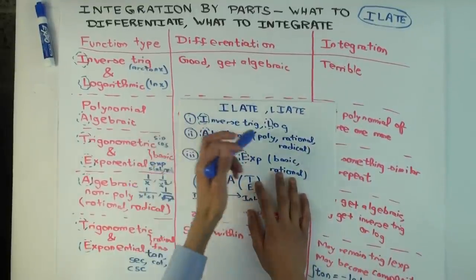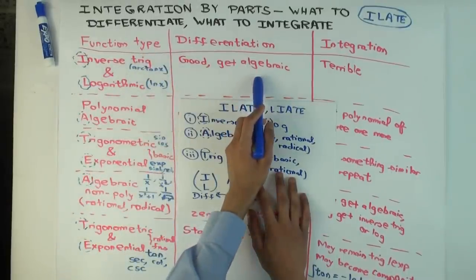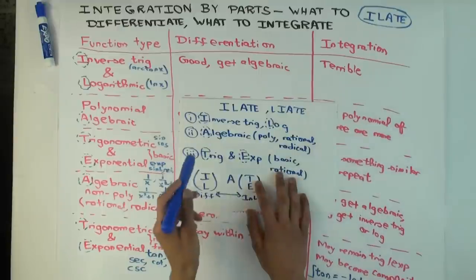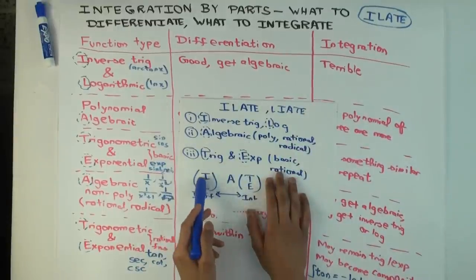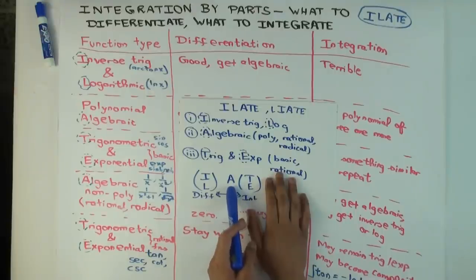Okay, so inverse trig and log, which are up here, when you differentiate you move into the algebraic domain, and you don't even try to integrate because it's terrible. And that's why you put them on the differentiate side. Because when you do differentiate them, they move somewhat nicer to algebraic things, which can be integrated.